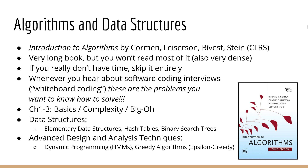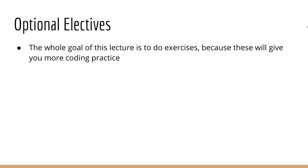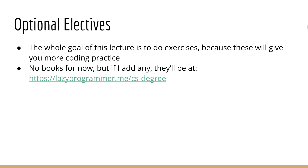Finally, I would recommend learning about graphs — basically my advice is to get through as much as you can. Software interviewers love questions about graphs. There are also some optional topics you may want to learn about in addition to the previous core topics. These will give you more context into why we do what we do in machine learning, and also more practice with coding, which is always useful. Remember that the whole goal of this lecture is for you to do exercises, and learning these other topics will give you plenty of opportunity for such exercises. If I add books on these topics in the future, you will find them at lazyprogrammer.me/csdegree.